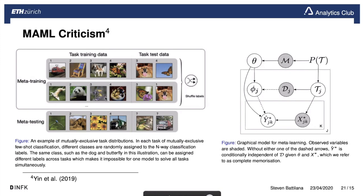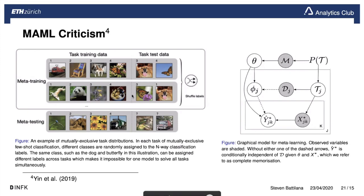This undesirable behavior leads to two problems: task overfitting and memorization. Memorization means the model just stores what it learned from task 1 and applies it to task 2 without any genuine adaptation — exactly what we want to avoid.